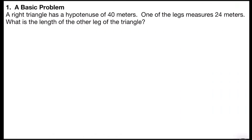Problem number one is a basic Pythagorean theorem problem. It says a right triangle has a hypotenuse of 40 meters. One of the legs measures 24 meters. What is the length of the other leg of the triangle?